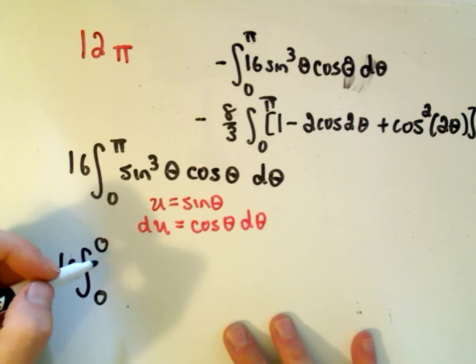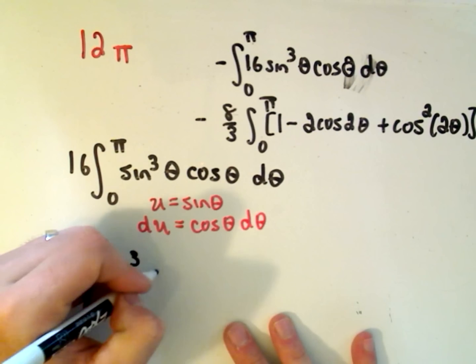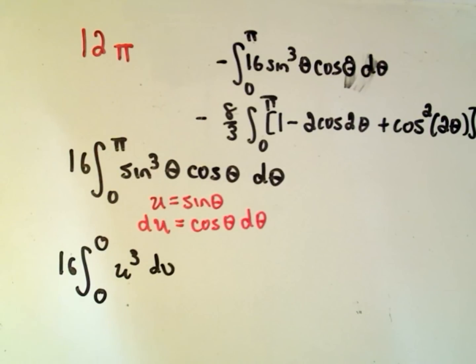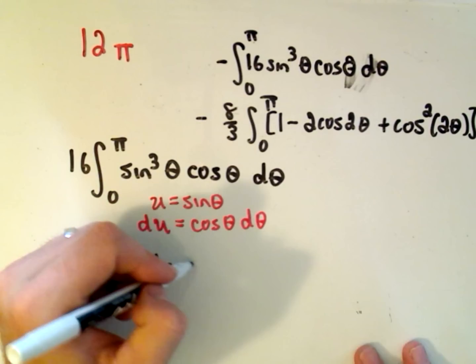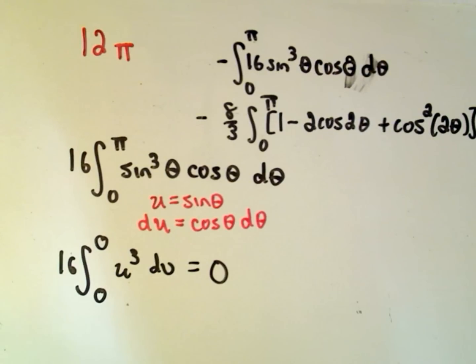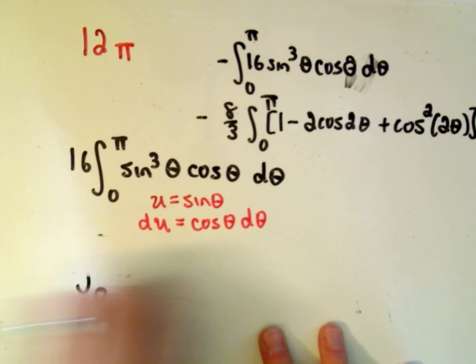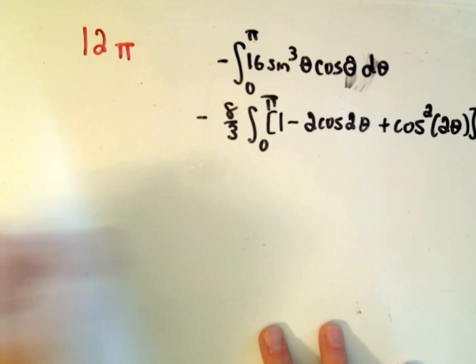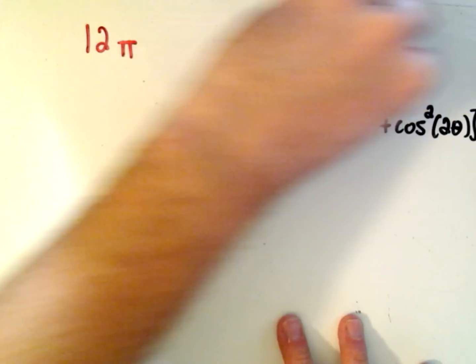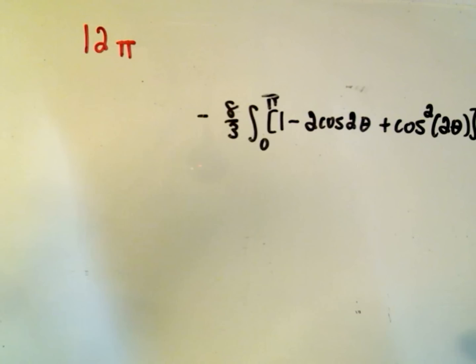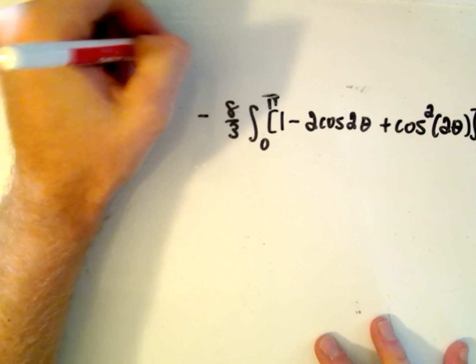So hey, this is kind of cute. And then we'll have u³ du left over. Well, if you ever integrate an integral from some number to the same number, that integral just works out to be 0. Okay, so it looks like the middle integral is going to be 0 in this case. Somehow I feel like I don't believe it, but there it is. Okay, so we'll get 0 on the second part. So minus 0.